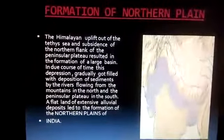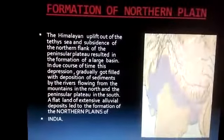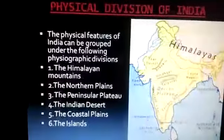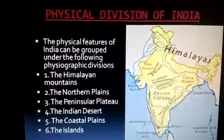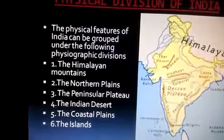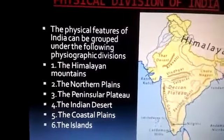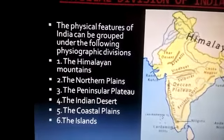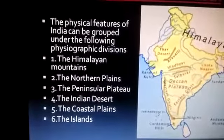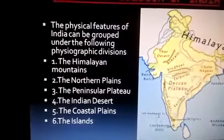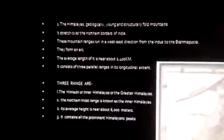You may get a five-mark question about how the Himalayas were formed. The physical divisions of India are mainly six types: one, the Himalayan mountains; two, the northern plains; three, the peninsular plateau; four, the Indian desert; five, the coastal plains; and six, the islands.